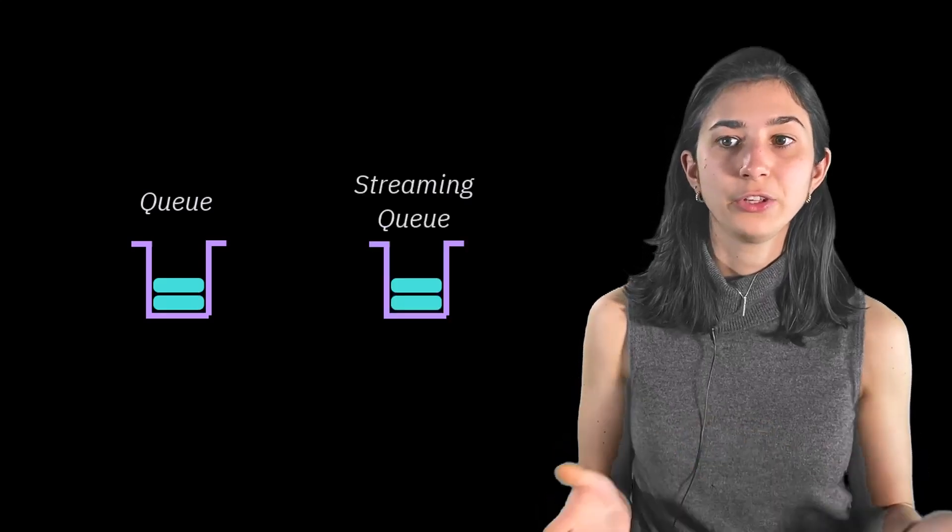As of MQ 9.3, MQ contains a streaming queue feature which allows a message that's put to a queue to be duplicated to a secondary queue called the stream queue.